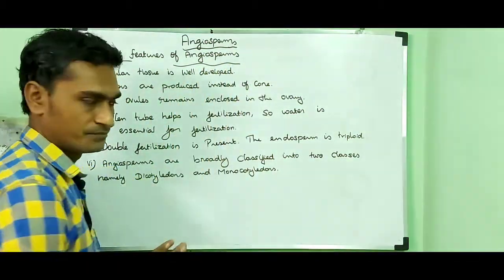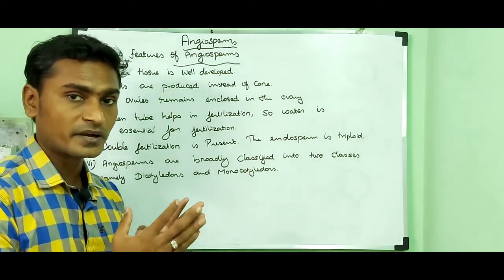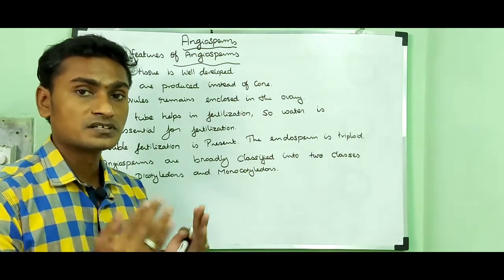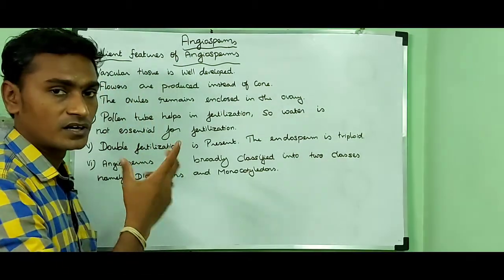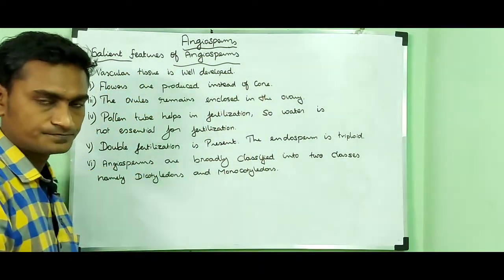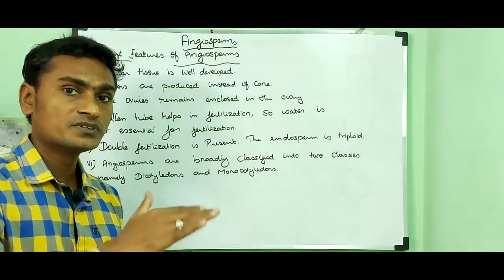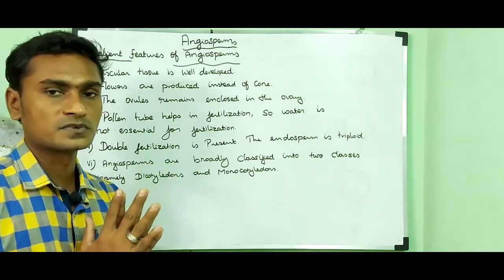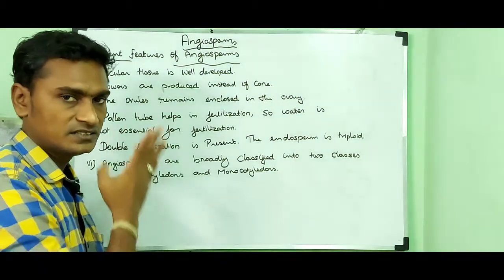Flowers are produced instead of cones. The microsporophylls condense to form the male cone and the megasporophylls condense to form the female cone. In angiosperms, the ovules remain enclosed in the ovary, so the ovary is present in angiosperms.